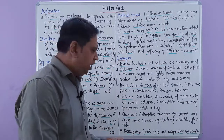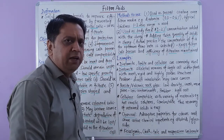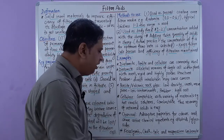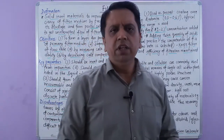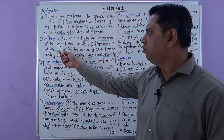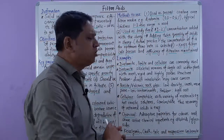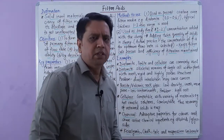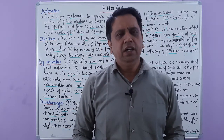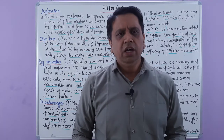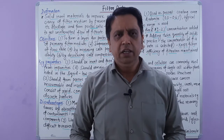A few more examples: kieselguhr has very high porosity and is used as a filter aid; chalk, talc, and magnesium carbonate are also used as filter aids. To summarize today's topic, we covered the definition, objectives, key properties, disadvantages, how to use filter aids, and examples. Hope you liked this video — press the bell icon for notifications about new videos and please share with your colleagues.